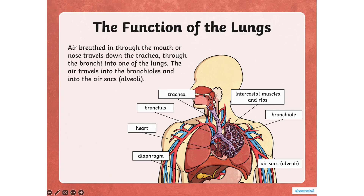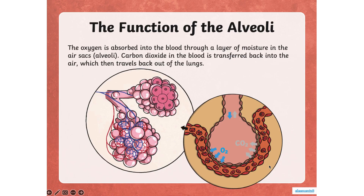The air you breathe in through your mouth or nose travels down the trachea — this spring shape you see is your trachea. Then you have the bronchi, which branch into bronchioles. From the bronchioles, the air finally reaches the air sacs called alveoli, which are lined with blood vessels.